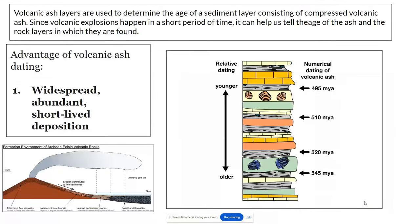Another thing that's really helpful for dating rocks is volcanic ash. When a volcano erupts, the volcanic ash is widespread — it spreads over long distances — it's abundant, and it happened in a short period of time. Volcanic ash also contains potassium-40, which we'll discuss in the future, and that can be really helpful for dating rocks. For example, if this volcanic ash layer is 495 million years old and this volcanic ash layer is 510 million years old, I know every other rock layer in between is somewhere between those two ages. Similarly, if one volcanic ash layer is 520 million years old and another is 545 million years old, everything in between should be an age between those two numbers. That's really helpful in dating rock layers.